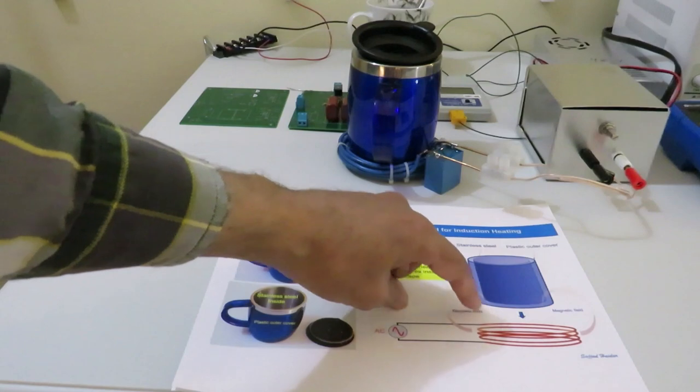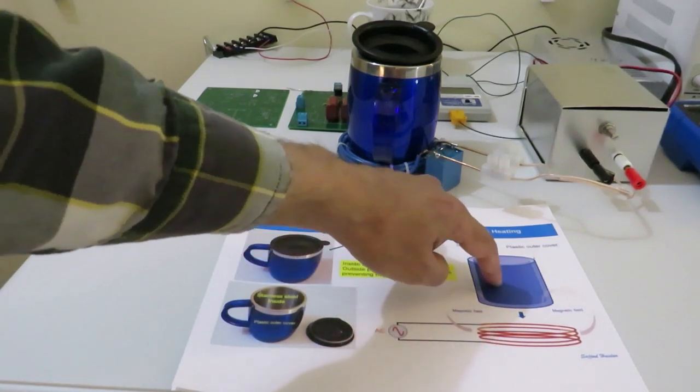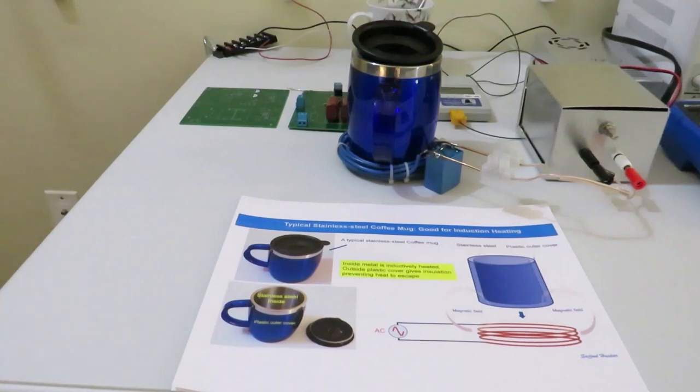The coffee mug should be placed on top of a coil. And the coil is supplied with an alternating current source.